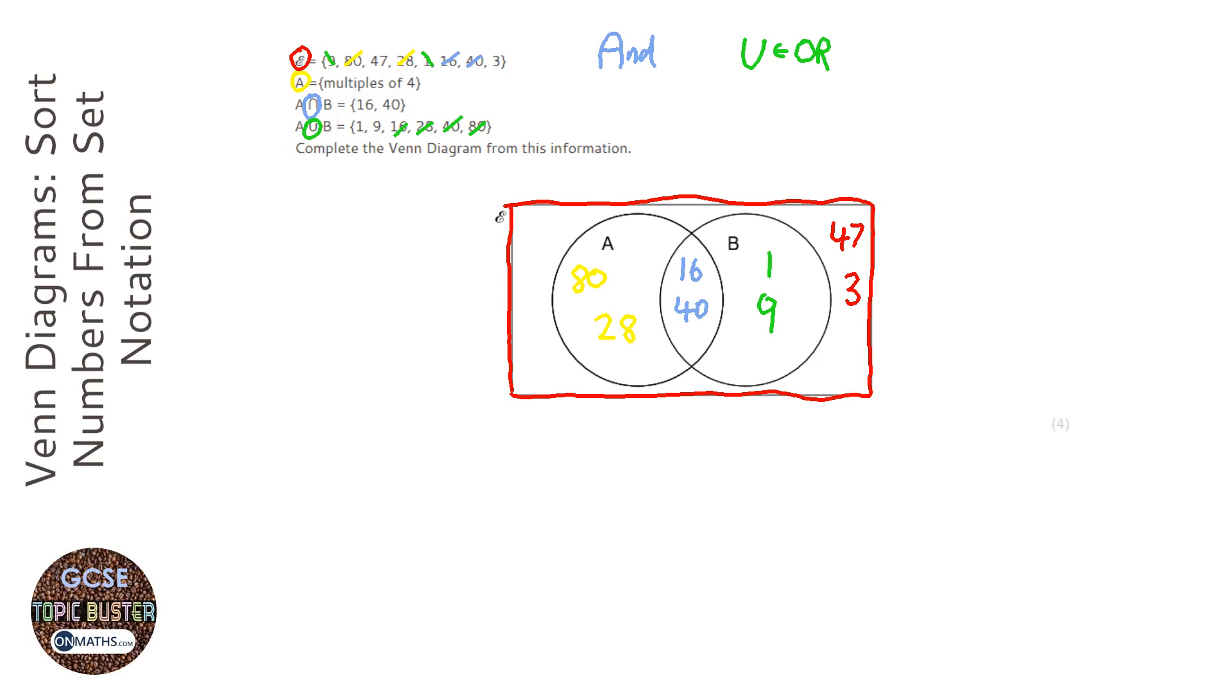Now the last thing to do is just go through and check. Check that you've got the same amount of numbers in your Venn diagram than you should do. Check all the multiples of 4 are in A. So let's have a look: 80, 16, 28, and 40. They're all multiples of 4.